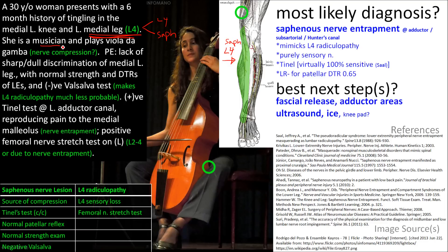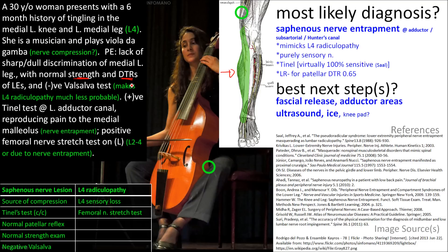When you look at what she does for a living, the instrument is pressing right on the adductor canal — exactly where the saphenous nerve passes through — so I'm already starting to suspect a peripheral nerve lesion. There's a sensory deficit in the medial leg, but strength and reflexes are preserved in the lower extremities. This is very important: normal strength and reflexes make radiculopathy much less likely. Because the saphenous nerve is purely sensory, an isolated sensory deficit with no strength or reflex deficit points toward saphenous nerve entrapment.